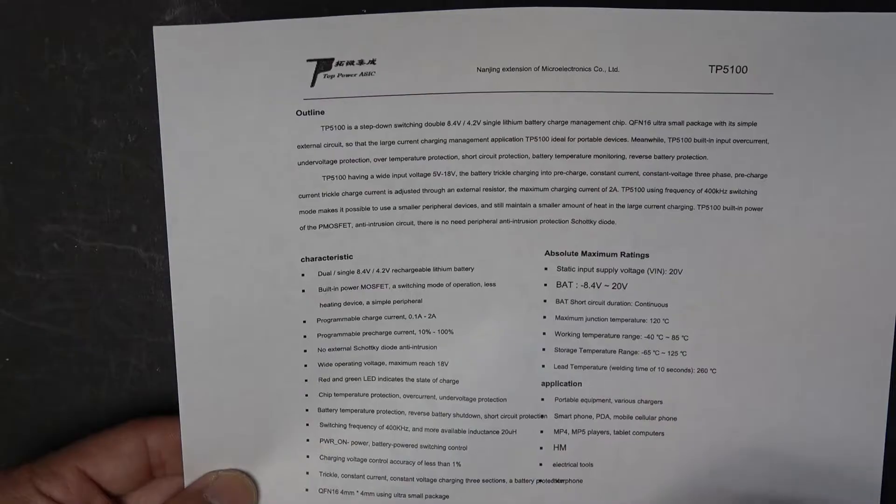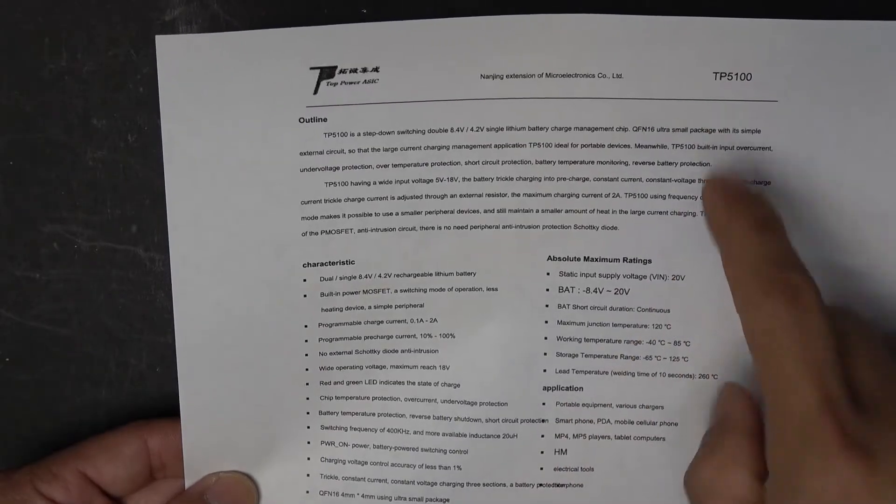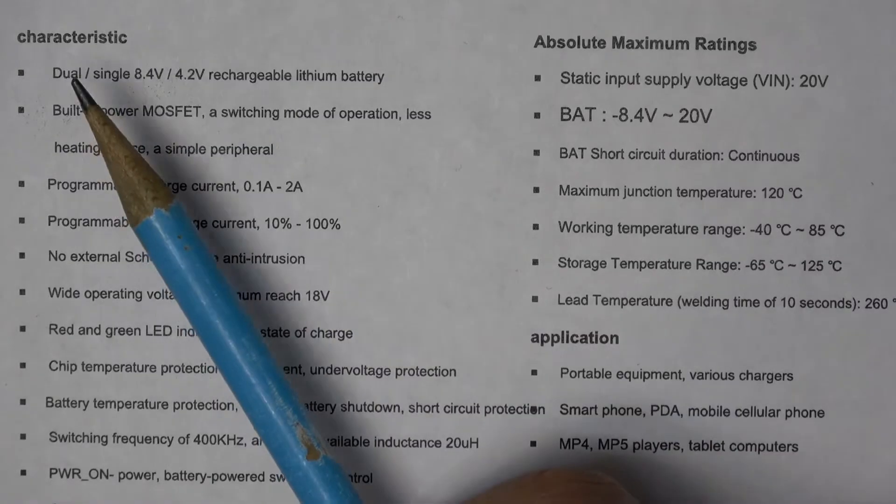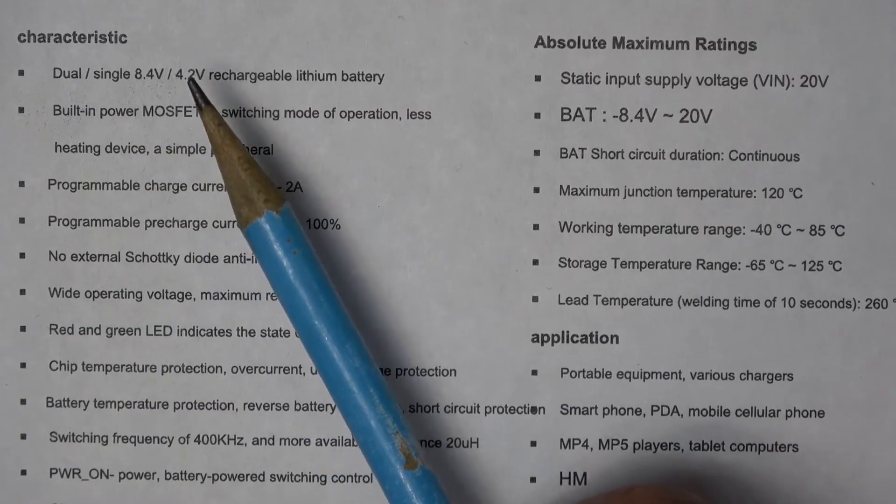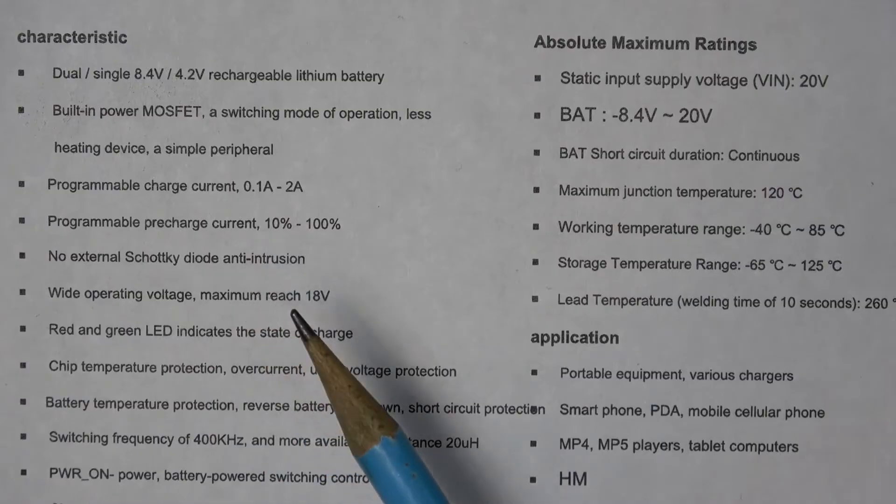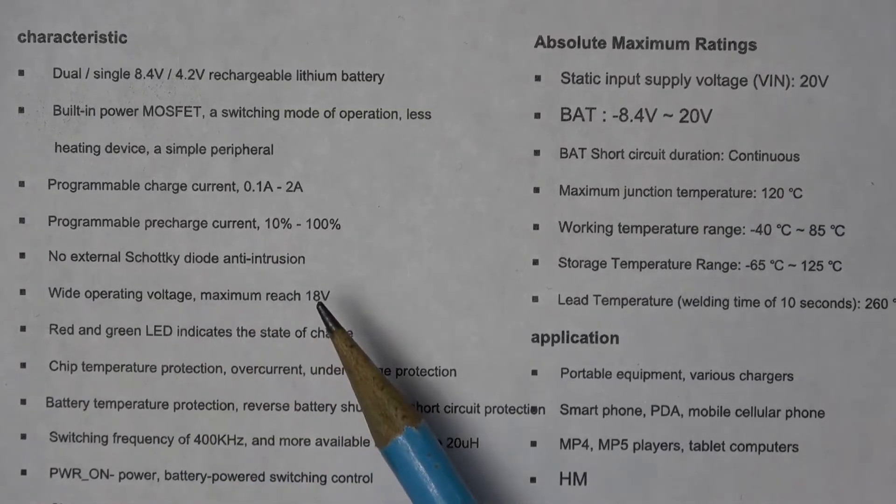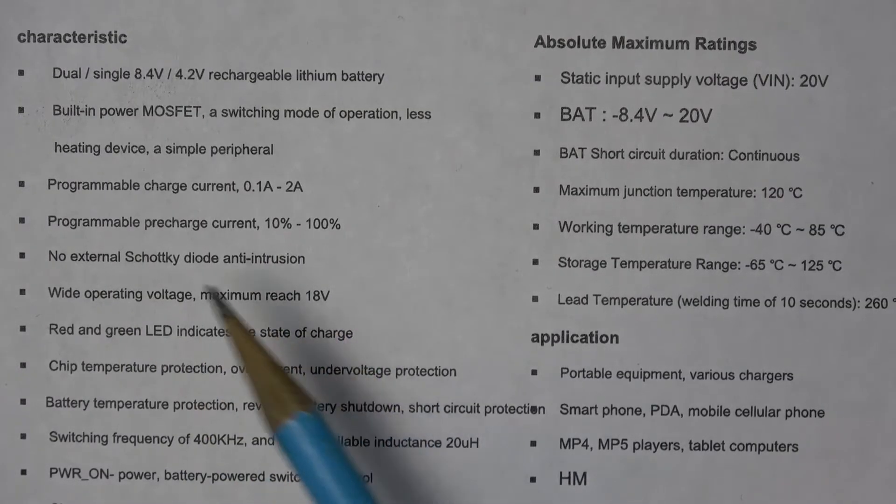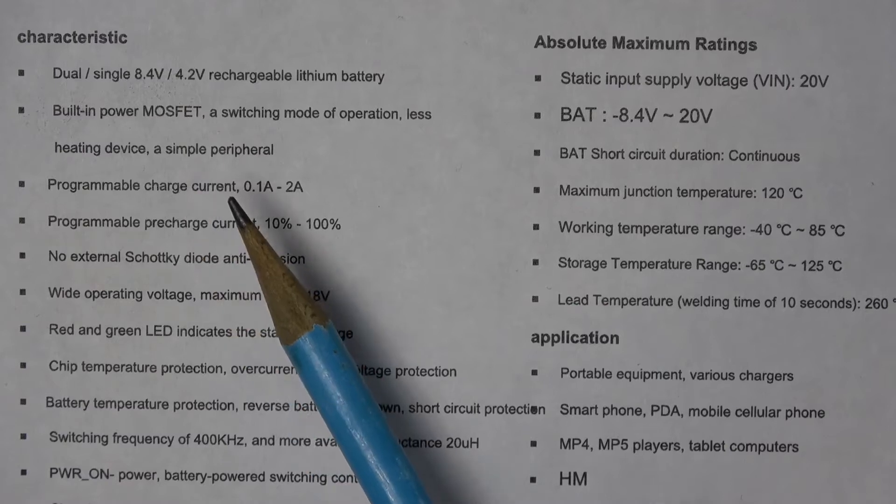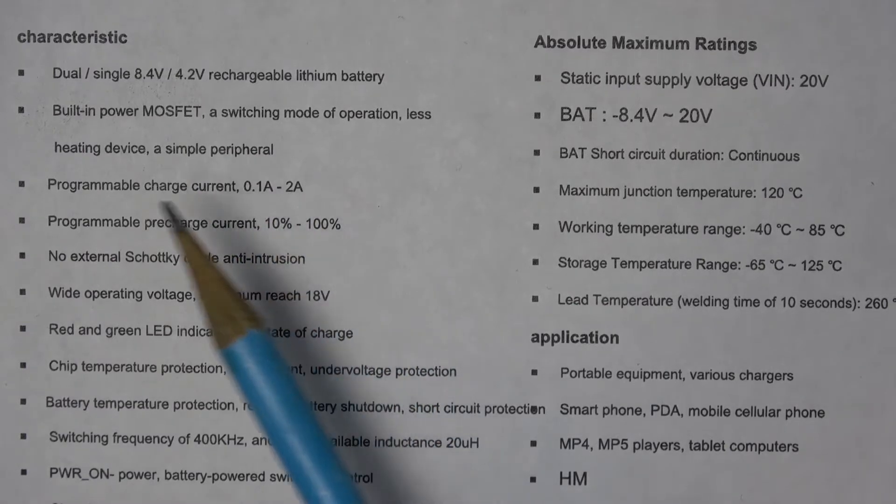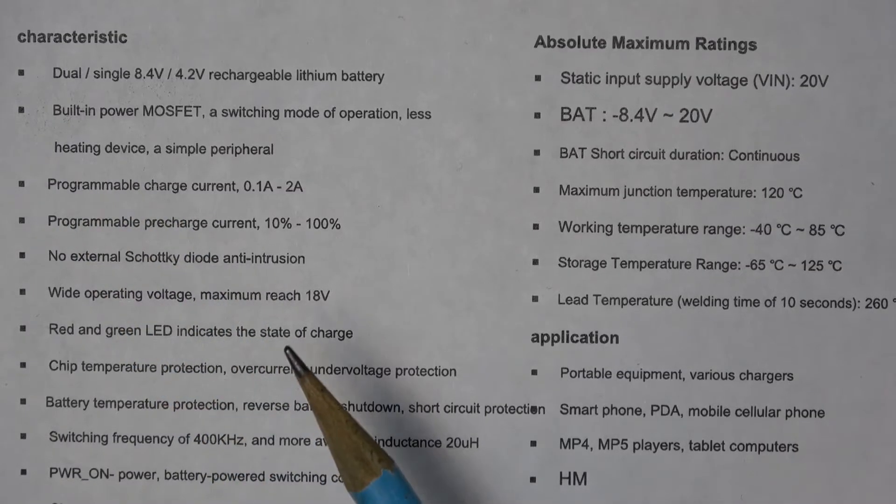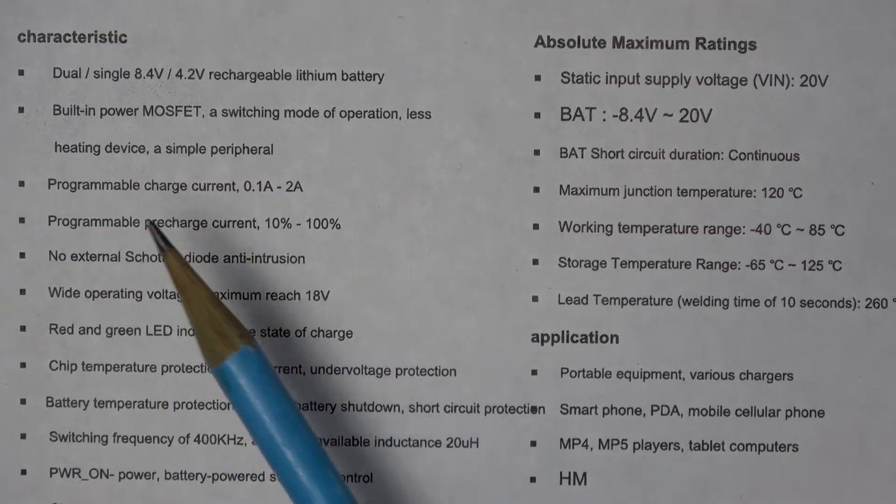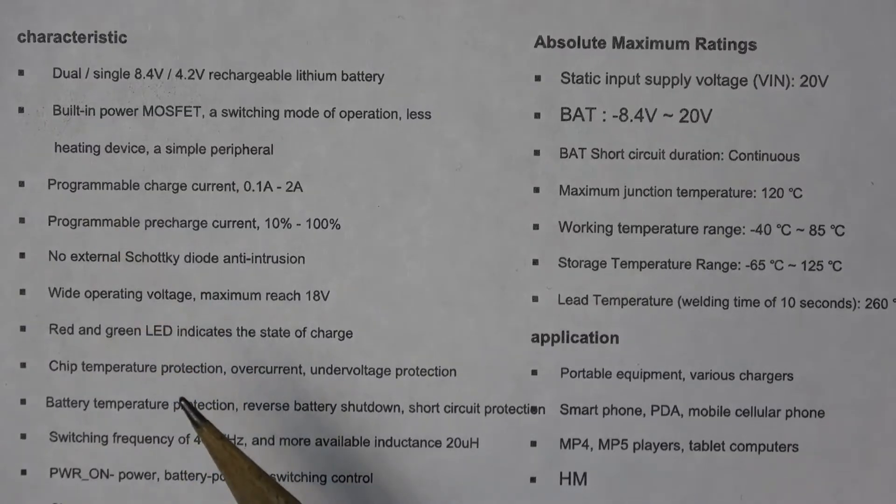Let's take a look at the spec sheet of the TP5100. We got dual charge at 8.4 volts or single charge at 4.2 volts. The input voltage can reach up to 18 volts. The charge current can go up to 2 amps and it's programmable - I'm not sure about programmable, maybe you can change the size of the resistor, but it's not really that easy to program.